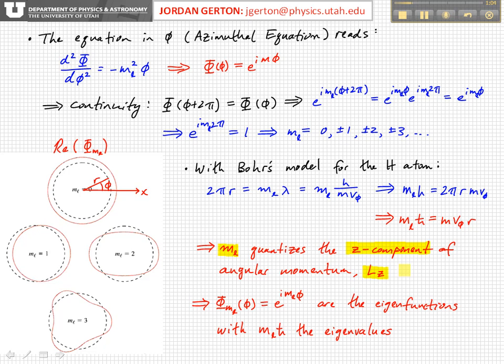And the wave functions, phi sub M, phi MLs, are the eigenfunctions of the azimuthal equation, with M sub MLs H bar, the eigenvalues. And so ML H bar has units of angular momentum. Those are the eigenvalues.